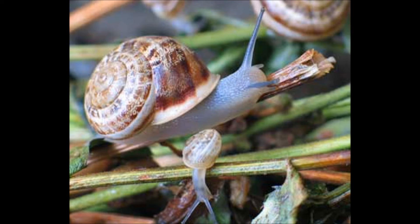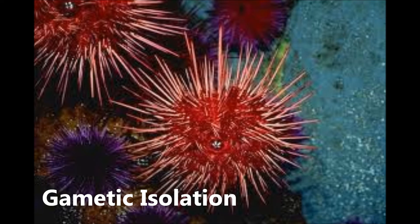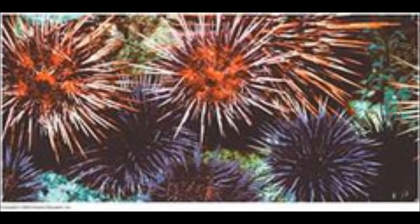Now we have gametic isolation. Differences in eggs and/or sperm prevent fertilization. When the gametes of one species cannot fuse with the gametes of another species to form a zygote, gametic isolation has occurred. This is a kind of lock-and-key isolating mechanism in which, despite successful mating or pollination, hybridization will not occur because the gametes of one species function poorly with the gametes or reproductive tract of another species.